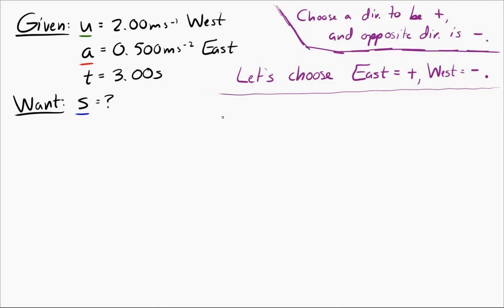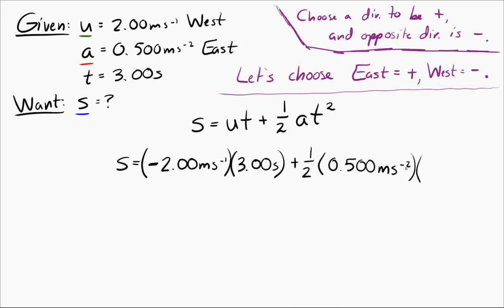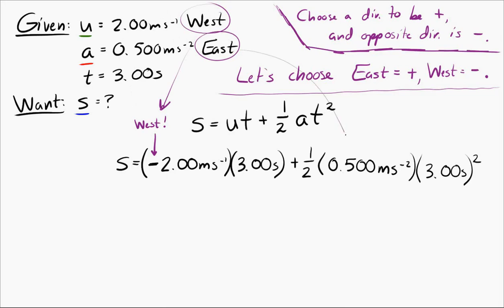We have u, a, and t and want to solve for displacement s, so we use s = ut + ½at². When putting values into the equation, east is positive and west is negative. Our initial velocity is to the west, so it goes in as negative; our acceleration is to the east, so it goes in as positive. Then we solve.